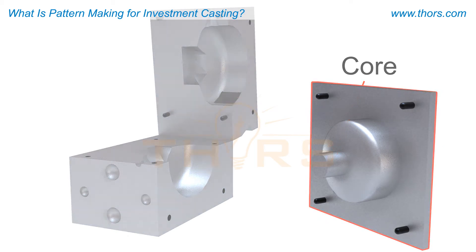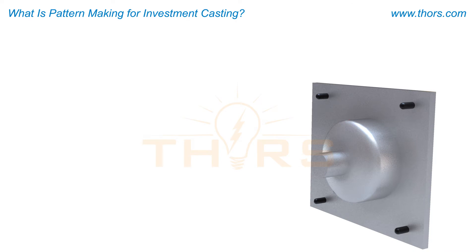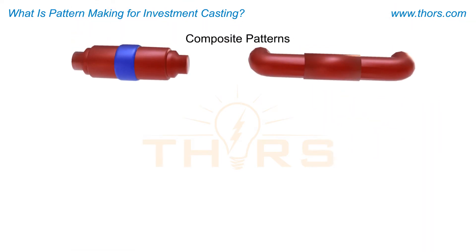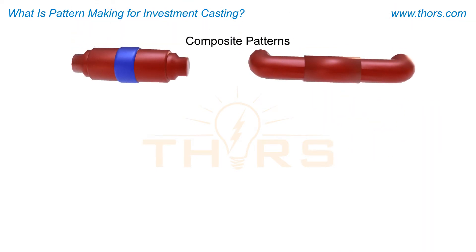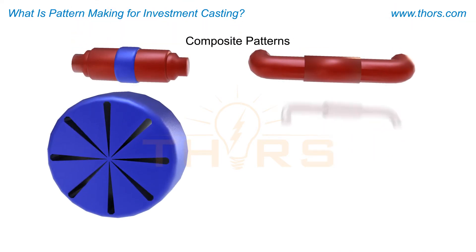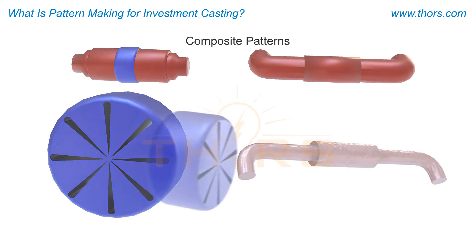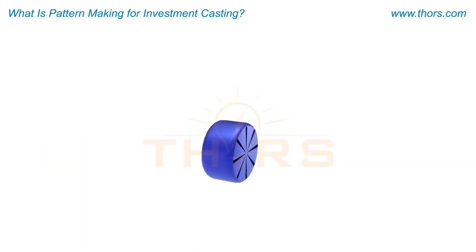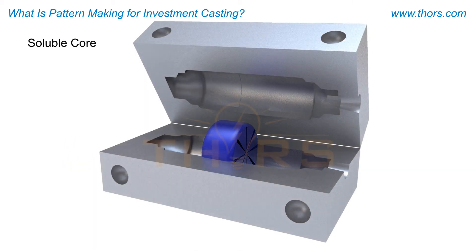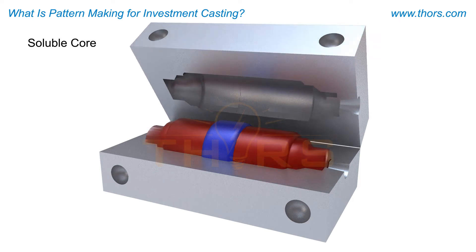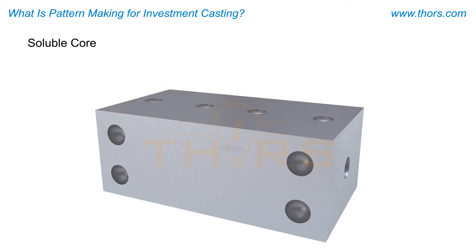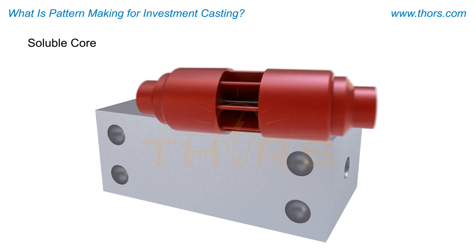If metal coring is not possible, a composite pattern is constructed with either a soluble or ceramic core. Cores produced from a soluble wax are placed into the dye and then surrounded by pattern wax. The soluble core is dissolved, leaving the pattern intact.